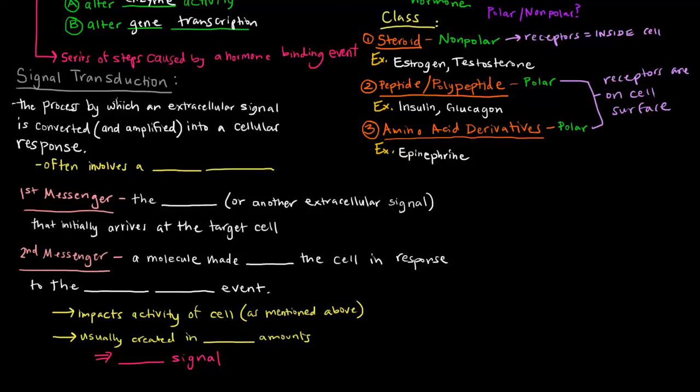Signal transduction usually involves this thing called a second messenger. The first thing that comes to mind when someone tells me this process involves a second messenger is, well, there's got to be a first messenger, right? You can't have a second one without a first one. And that is the case. The first messenger is the actual hormone, or whatever that extracellular signal is. The hormone that's coming to bind the cell initially—or bind the receptor, the cell's receptor—that's the first messenger.